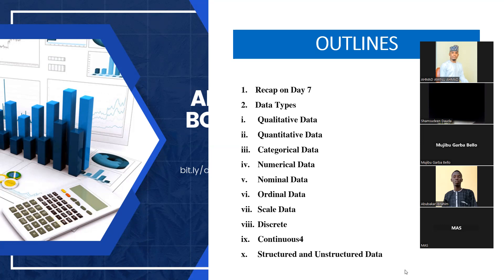Continuous data is data that doesn't have a specific value — it can take any number, including decimal places. For example, the height of people can be 165.3 or 165.4. Gold can be measured in 0.00002 grams, and even digital currencies you see — 0.00002 can sometimes be worth millions of Naira. So that's continuous data because it can take any value and each decimal place matters.